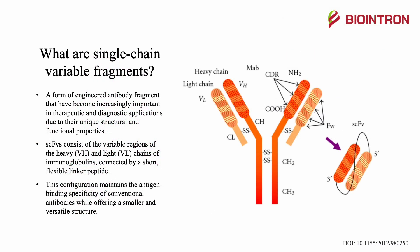What are single-chain variable fragments? They are a form of engineered antibody fragment that have become increasingly important in therapeutic and diagnostic applications due to their unique structural and functional properties. SCFVs consist of the variable region of the heavy VH and light VL chains of immunoglobulins connected by a short, flexible linker peptide. This configuration maintains the antigen-binding specificity of conventional antibodies while offering a smaller and versatile structure.